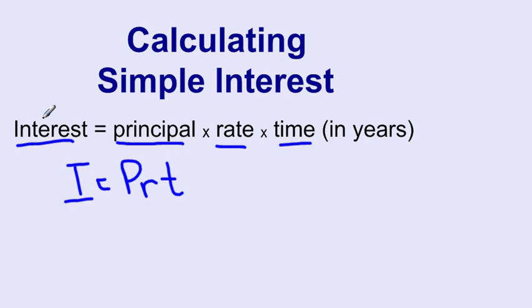Interest is the amount of interest earned or paid. Principal is the amount you either invested in the first place or the amount of loan you took out. Rate is the interest rate as a decimal, so if it's given as a percentage, we're going to need to divide by 100. And time is the time in years.